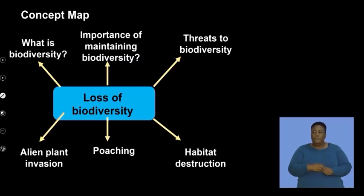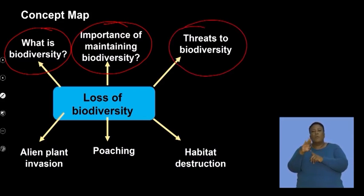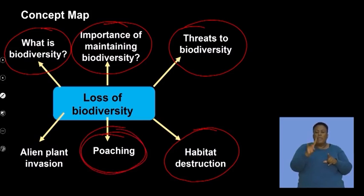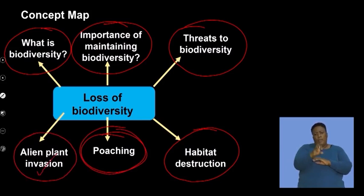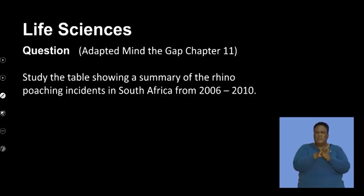Earlier in this segment we looked at what biodiversity is, we looked at the importance of maintaining biodiversity, and we discussed the threats to biodiversity. We spent time looking at habitat destruction, poaching as an impact on biodiversity, and we discussed what alien plant invasion is and how that becomes quite expensive to maintain. Now let's look at the impact of poaching by applying our understanding to the conservation of animals in South Africa.